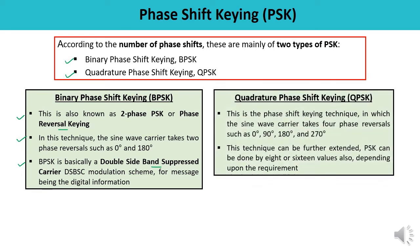The second type is quadrature phase shift keying. 'Quad' means four, so this is the phase shift keying technique in which the sine wave carrier takes four phase reversals: 0 degrees, 90 degrees, 180 degrees, and 270 degrees. This technique can be extended further — PSK can be accomplished using 8 or 16 values accordingly, depending upon the requirement.